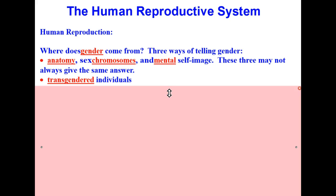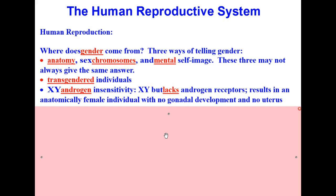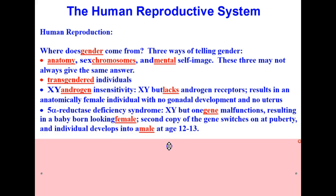For example, we have transgendered individuals. There's another example of XY androgen insensitivity. This is when an individual is XY — that would be male — but lacks androgen receptors, resulting in an anatomically female individual with no gonadal development and no uterus. Another example is 5-alpha reductase deficiency syndrome. These individuals are also XY as far as their sex chromosomes are concerned, but one gene malfunctions, resulting in a baby born looking female, and then the second copy of the gene switches on at puberty, and the individual develops into a male at age 12 to 13. So some interesting cases in which anatomy, sex chromosomes, and mental self-image don't necessarily always line up.